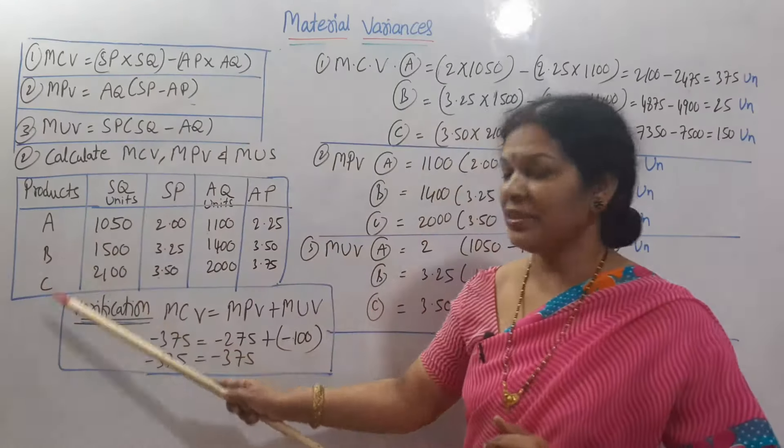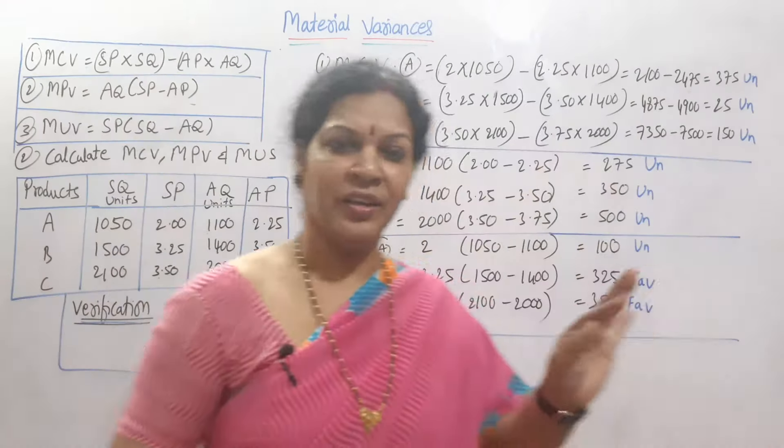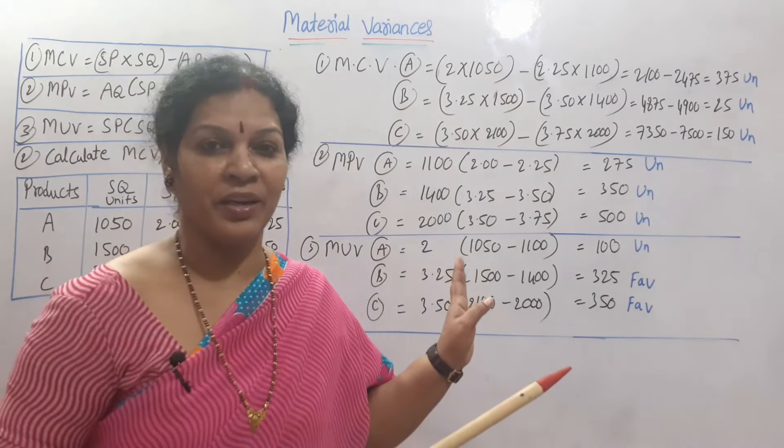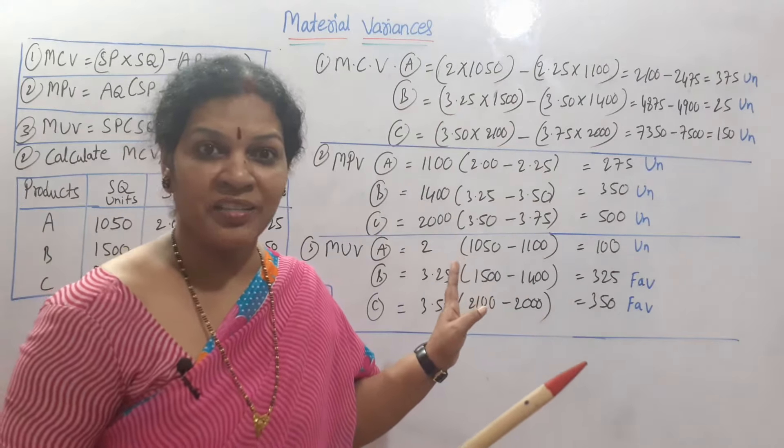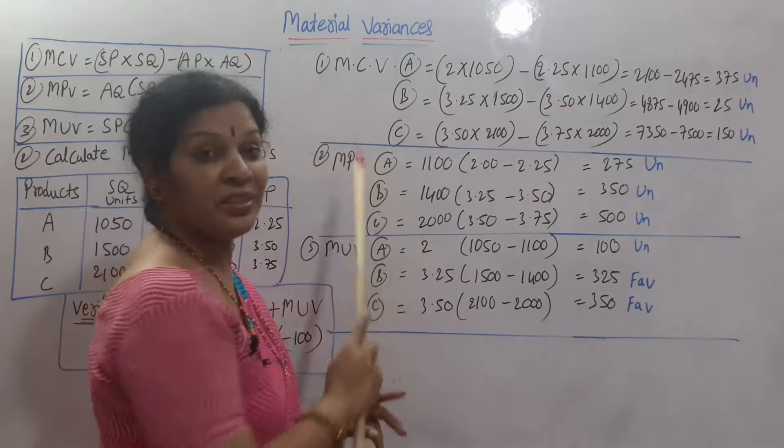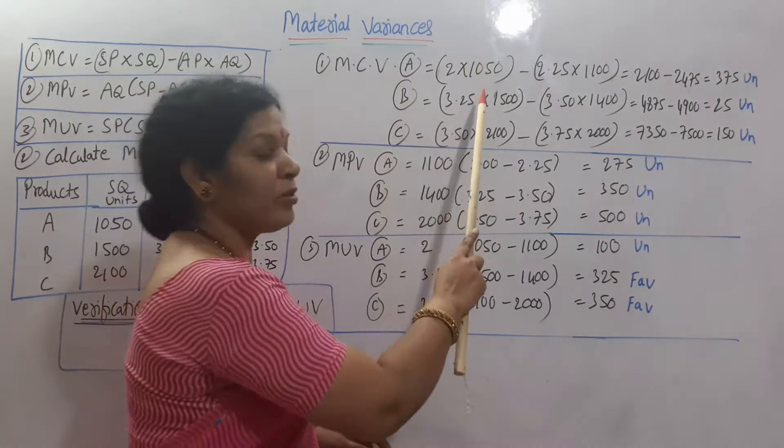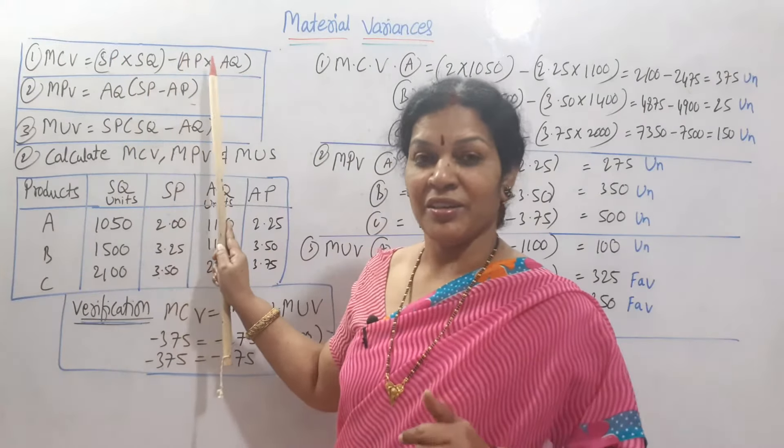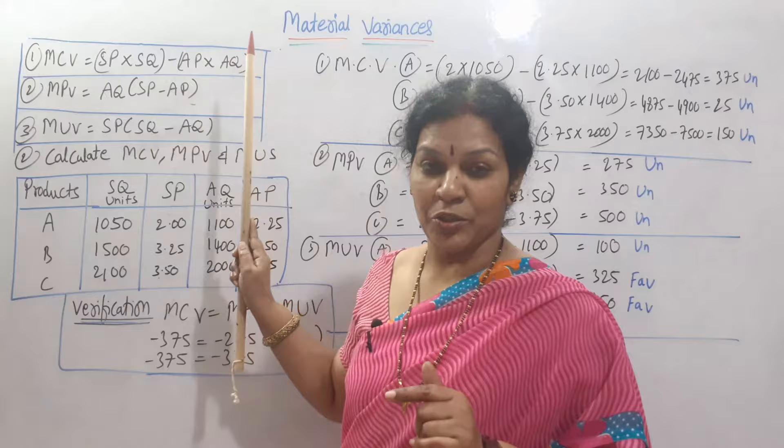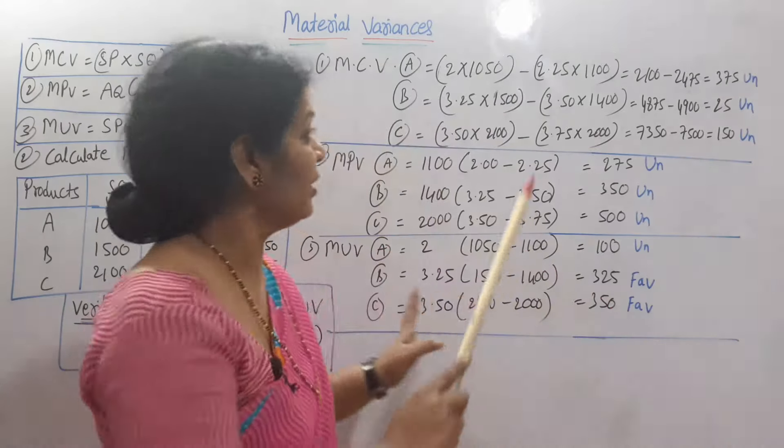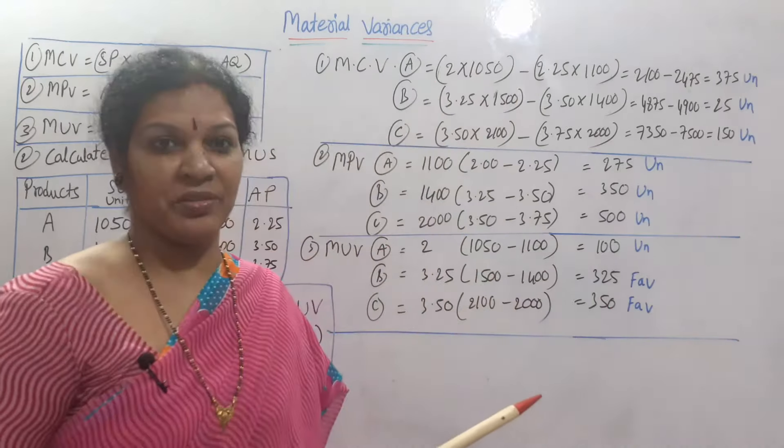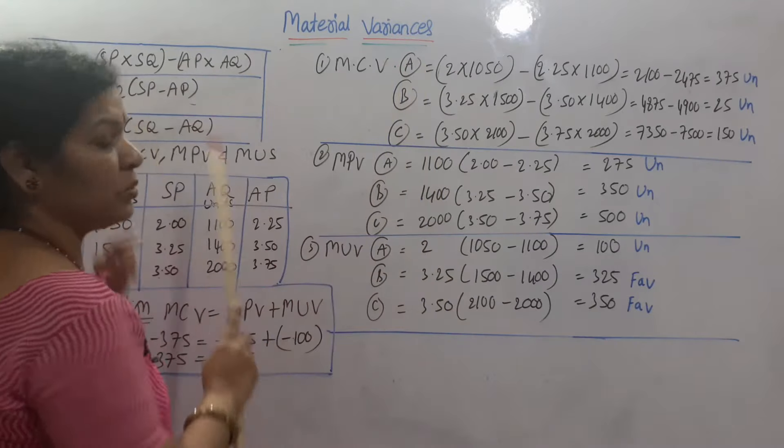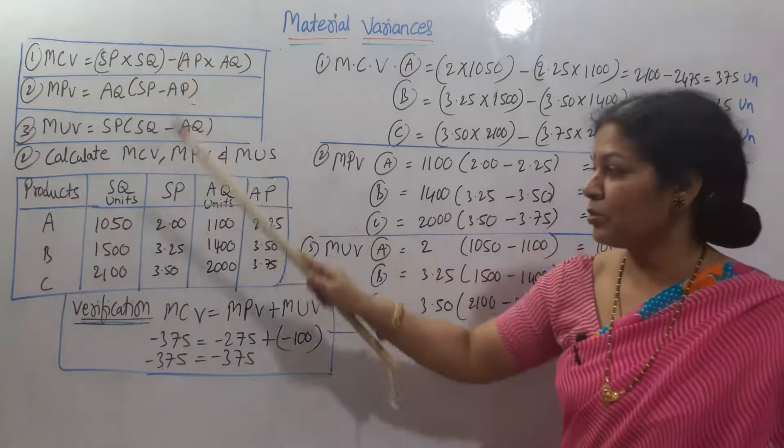When you have products A, B, C separately, you have to calculate. Material cost variance, separately I have taken. You have to write the full form: material cost variance is equal to, and the formula. SP into SQ minus AP into AQ. Formula you have to write. Then after that, this step comes.